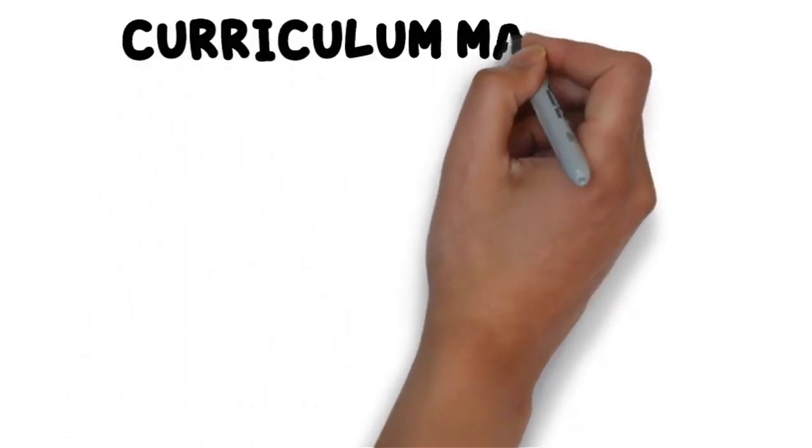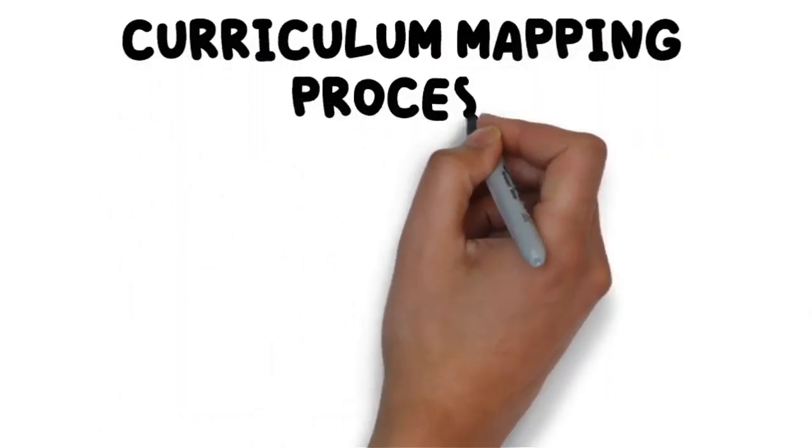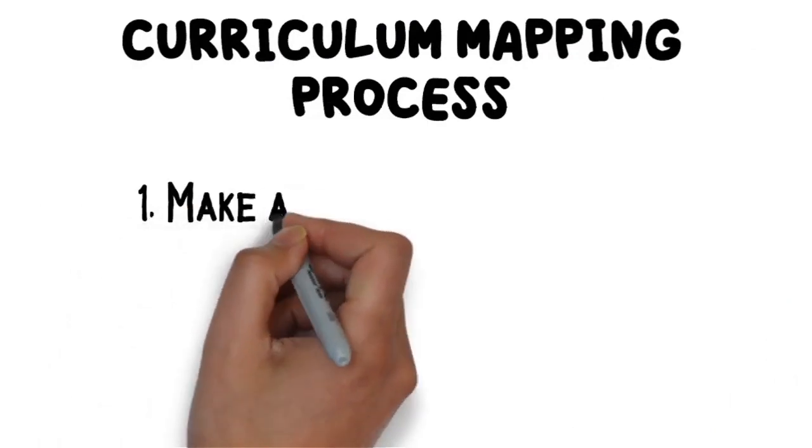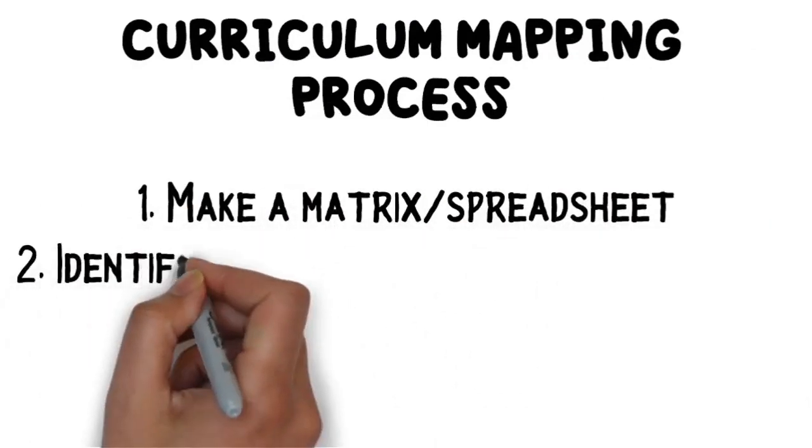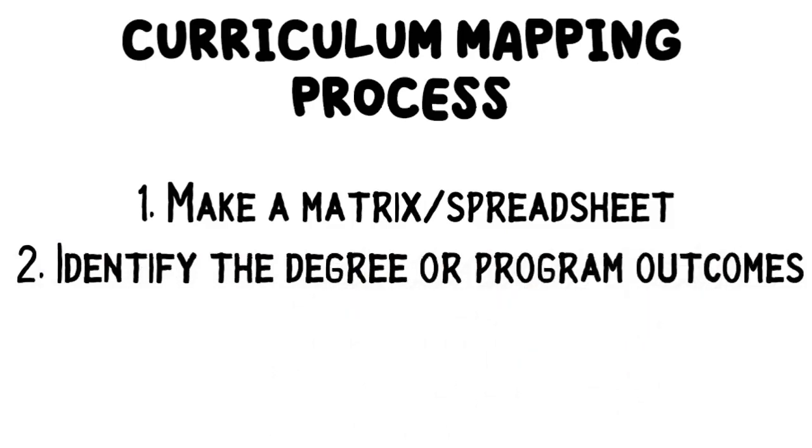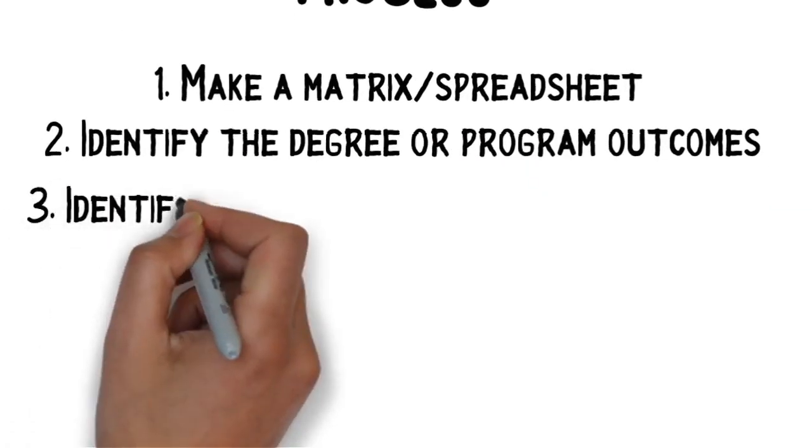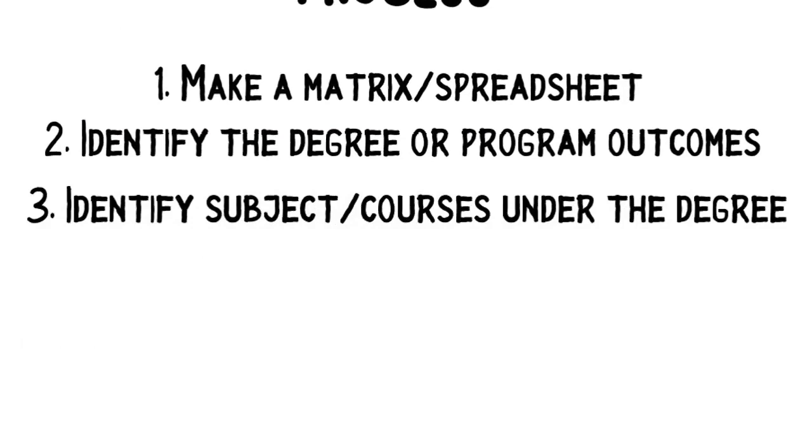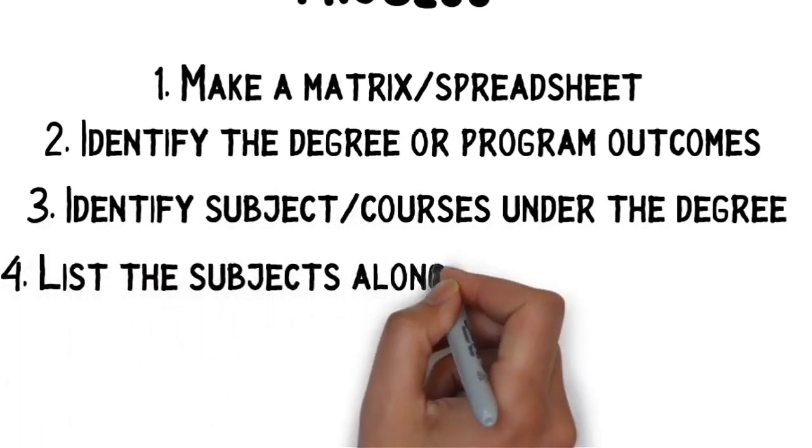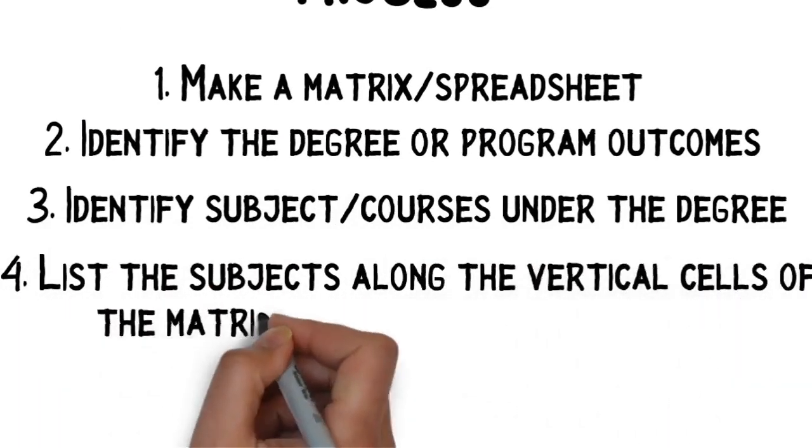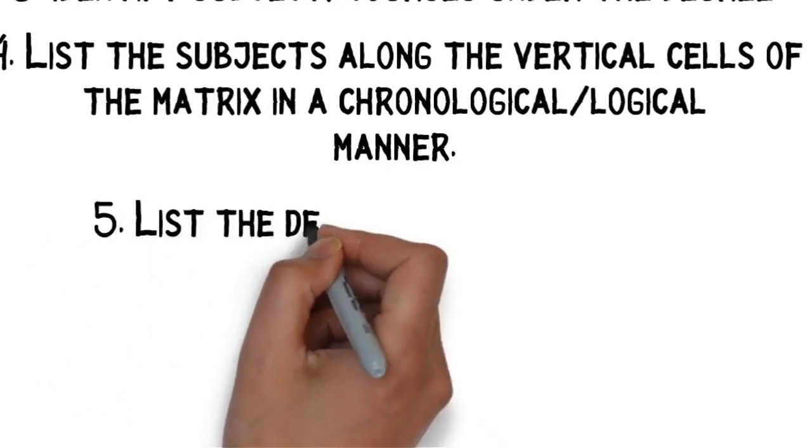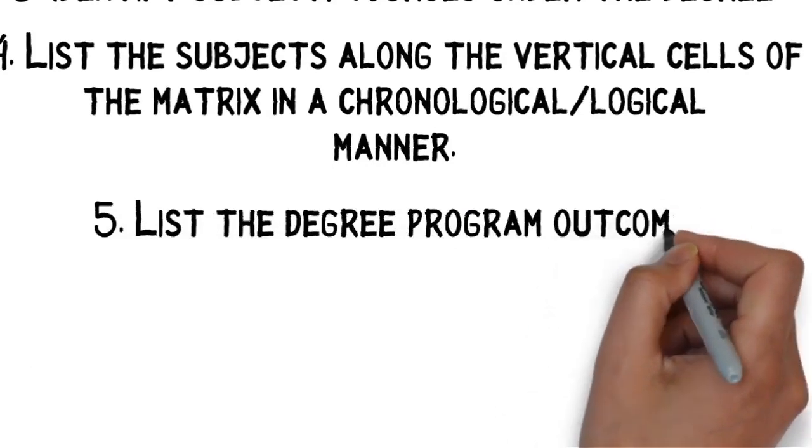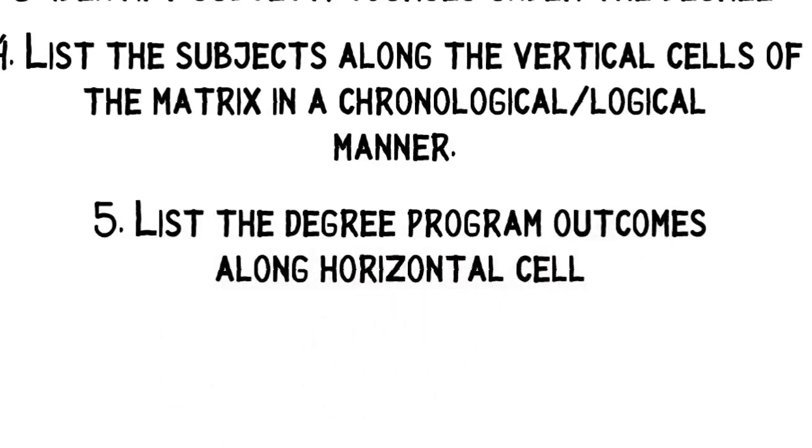Here is the process in curriculum mapping for higher education. 1. Make a matrix or a spreadsheet. 2. Identify the degree or program outcomes. 3. Identify subject courses under the degree. 4. List the subjects along the vertical cells of the matrix in a chronological logical manner. 5. List the subject degree or program outcomes along the horizontal cell.